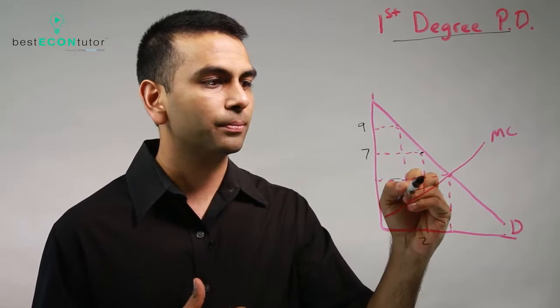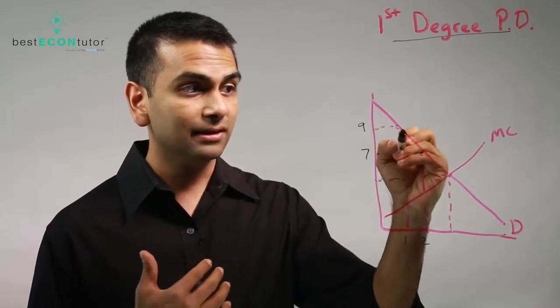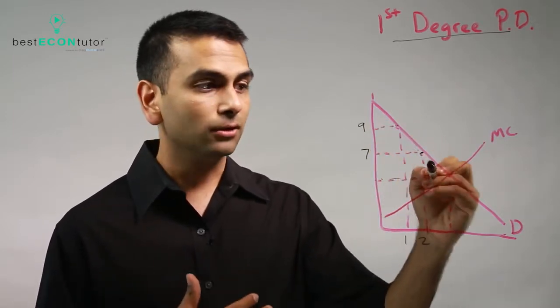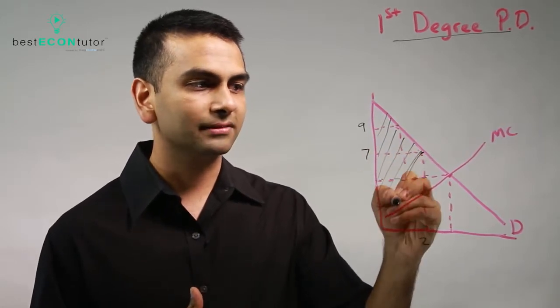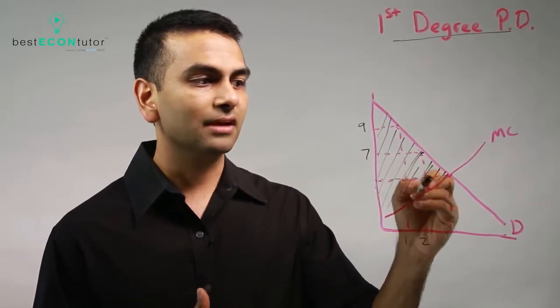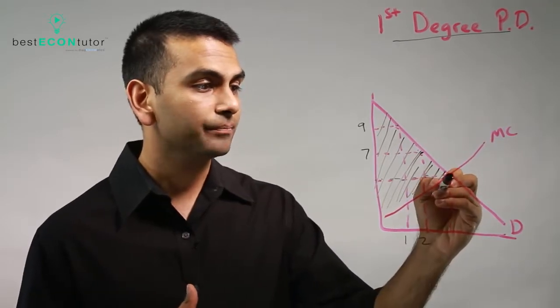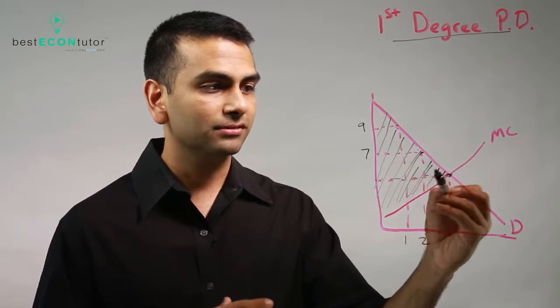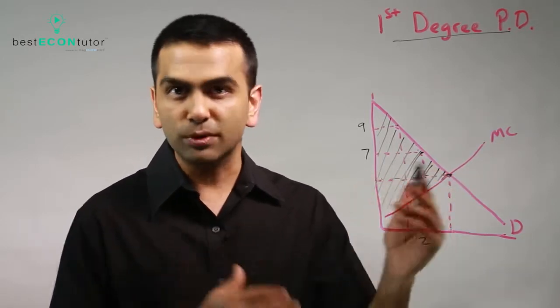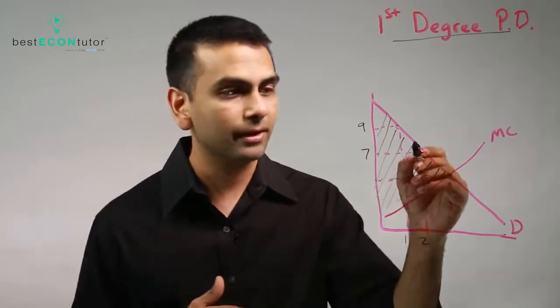So instead of charging the same low price for everything, you're actually charging a different price and so now you actually get all this as a part of your producer surplus. And the thing is you don't need to stop now where MR equals MC. You can go all the way over here where supply and demand usually intersect for perfect competition, because you don't sort of lose profits on earlier products as we talked about earlier.